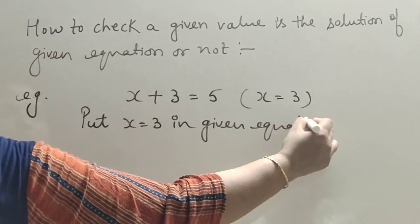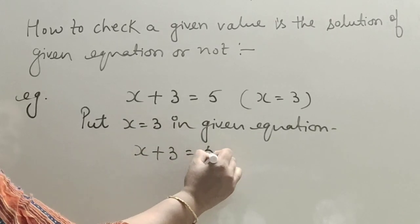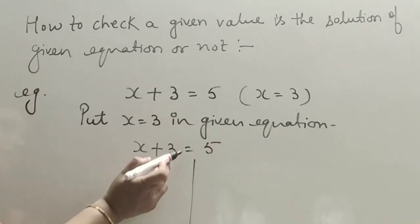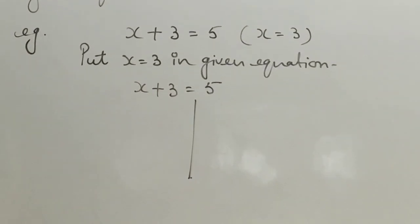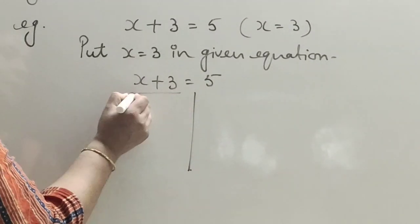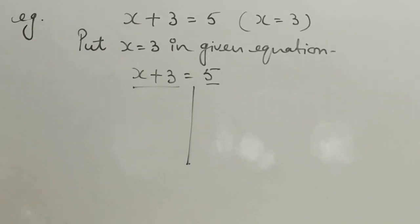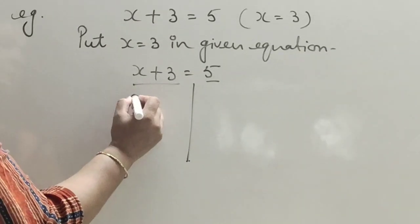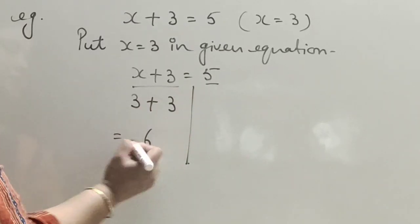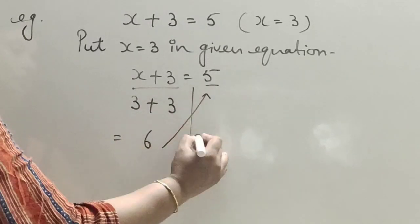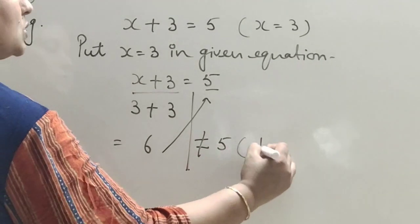We substitute the given value into the equation and check. On the left-hand side, replacing x with 3 gives 3 plus 3, which is 6. But the right-hand side is 5. Since 6 does not equal 5, x equals 3 is not the solution.